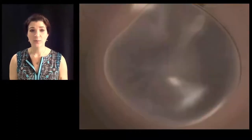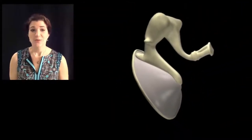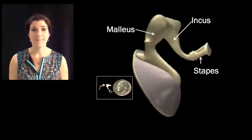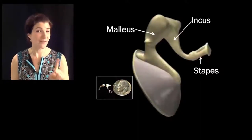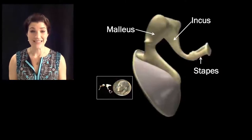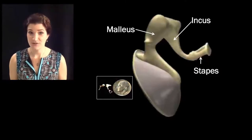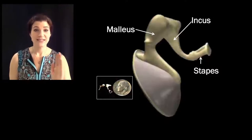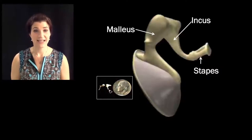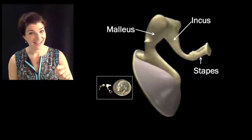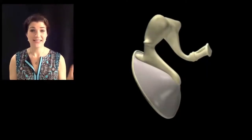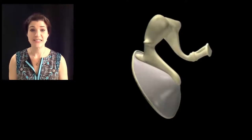Now let's look at what's happening on the other side of the tympanic membrane. It is connected to three tiny bones called the auditory ossicles. The ossicles are called the malleus, the incus, and the stapes — the three smallest bones in the human body. Knowing that the stapes is the smallest bone in the human body is likely to get you points at trivia. As the tympanic membrane vibrates, it causes the ossicles to vibrate, thereby carrying those vibrations deeper into the inner ear.